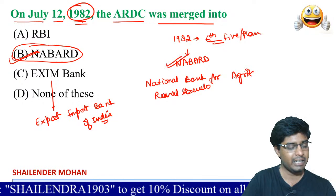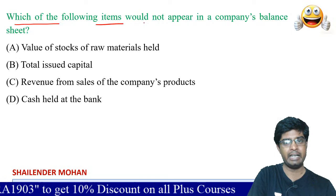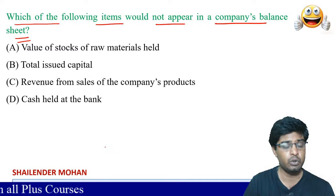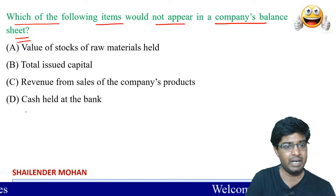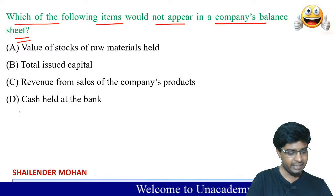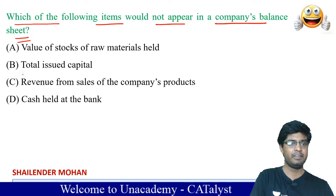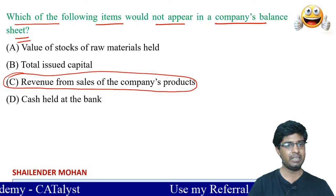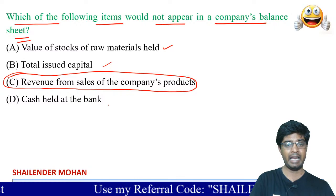Which of the following items would not appear in a company's balance sheet? The answer is C option — revenue from sales of the company's product. This does not appear in a company's balance sheet. What appears in the balance sheet is: value of stock, total issued capital, and cash held in the bank. But revenue from sales of a company's product is not recorded there.